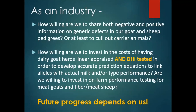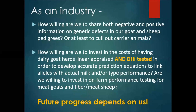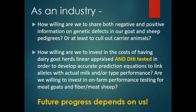As an industry, we goat producers have to decide how willing we are to share both negative and positive information on genetic defects in our goat and sheep pedigrees, or at least make sure that we're willing to call out carrier animals. We also need to ask ourselves how willing we are to invest in the cost of having dairy goat herds linear appraised and DHI tested, in order to develop accurate prediction equations to link alleles with actual milk and type performance. Are we willing to invest in on-farm performance testing for meat goats and fiber sheep as is available through NSIP? The future progress of the goat industry depends on us.